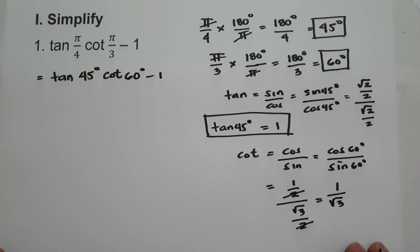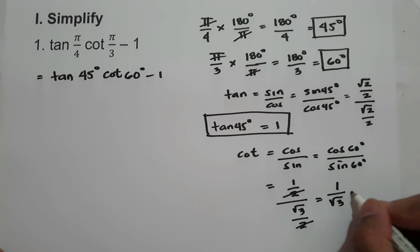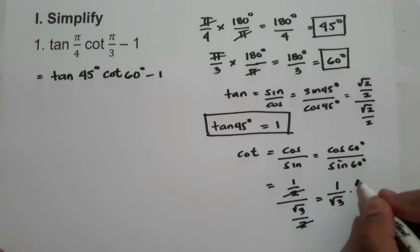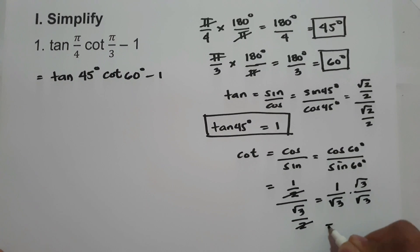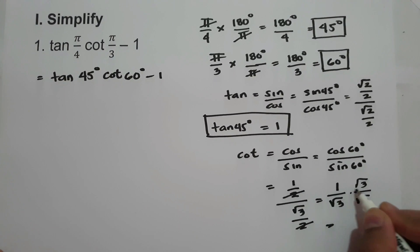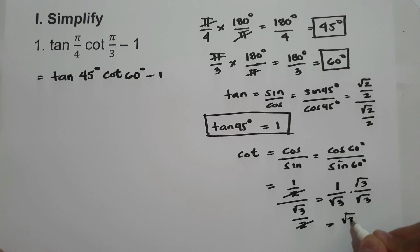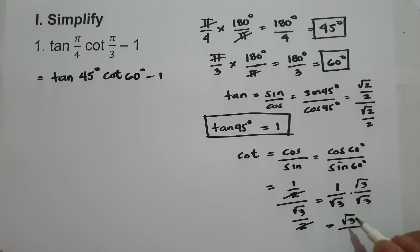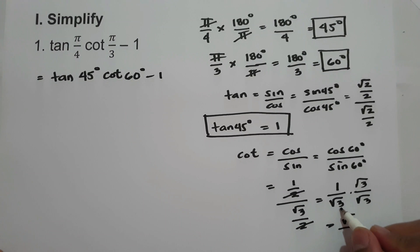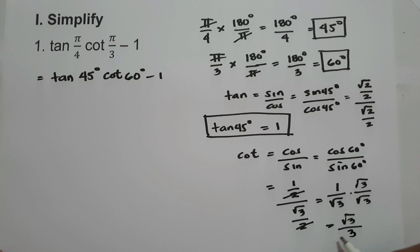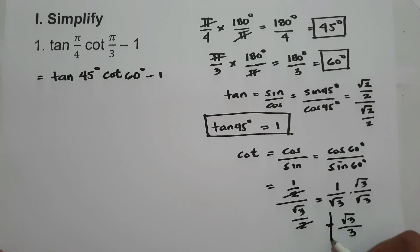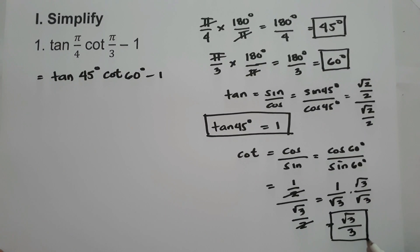And let us rationalize by multiplying the numerator and denominator by square root of 3. 1 times square root of 3 is square root of 3. And square root of 3 times square root of 3 is square root of 9, and the square root of 9 is 3. So this will be the value of cotangent 60 degrees.